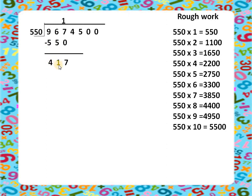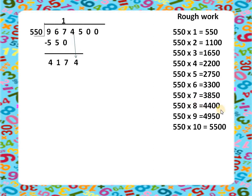417 is less than 550, so it is not sufficient to divide. We bring down one more digit to get 4174 as our new dividend. Now let's see which category 4174 falls into — 8 times 550 would be too big, so we try 7 times.